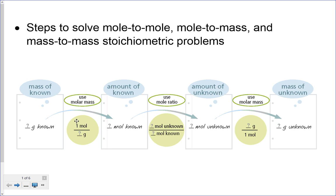So the first conversion — if they give us grams of whatever we're working with, say they gave us 20 grams of sodium, we'd have to convert that to moles. We know how to do that: one mole of sodium weighs whatever it weighs, we do that conversion and convert it to the moles of our known substance.